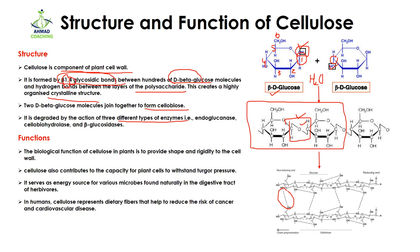To degrade cellulose you need three different enzymes. The first is endoglucanase — 'endo' means inside, so it breaks the cellulose chain from the inside. The second type of enzyme is known as cellobiohydrolase, which breaks the cellulose from the outside.